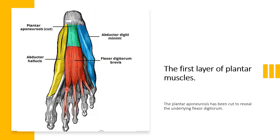Abductor hallucis: the origin is the medial tubercle of the calcaneum and the plantar aponeurosis. It inserts into the medial side of the proximal phalanx of the great toe. The action is to abduct and flex the great toe. Nerve supply is the medial plantar nerve.